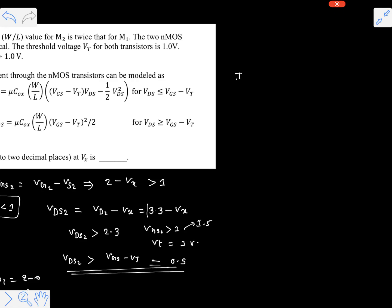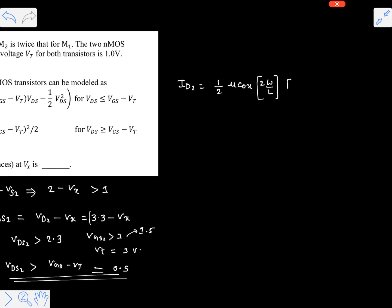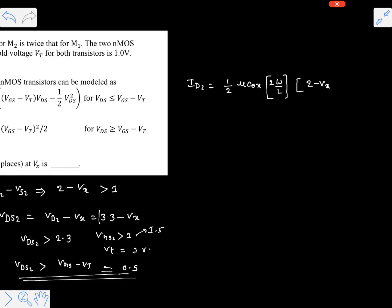Now let's write the drain current ID2. Since M2 is in saturation, it is: ID2 = (1/2) · μCox · (W/L)_M2 · (Vgs2 − Vt)². Since the W/L ratio of M2 is twice that of M1, we use 2·(W/L). Vgs2 is 2 minus Vx, so the equation becomes: ID2 = (1/2) · μCox · 2(W/L) · (2 − Vx − 1)² = μCox · (W/L) · (1 − Vx)².